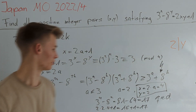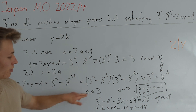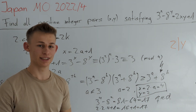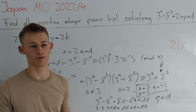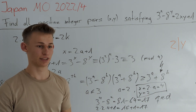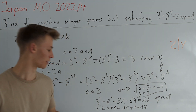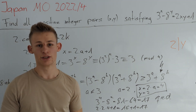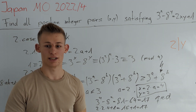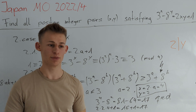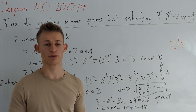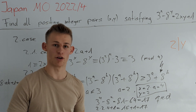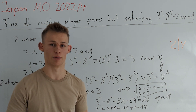If you want to see the bound that a is less than or equal to 3 in detail, and the cases a equals 1 and a equals 3 worked out in full, you can find the solution PDF in the description of this video or on our website.